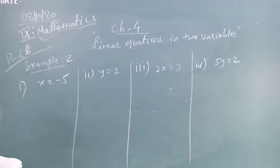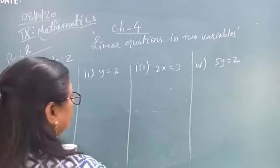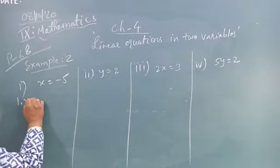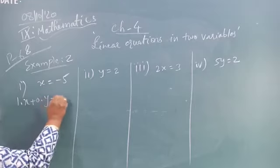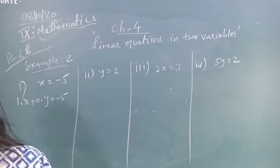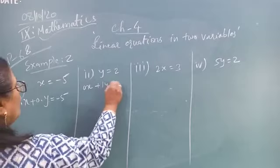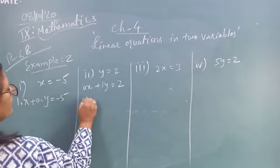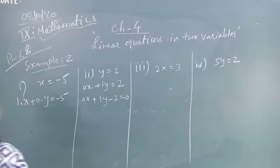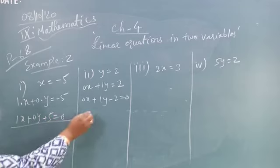In the first question, the value of X is given as minus 5. So this can be written as: 1 times X plus 0 times Y is equal to minus 5, and the standard form is 1X plus 0Y plus 5 is equal to 0. For the second one, Y is equal to 2 means we can write: 0X plus 1Y is equal to 2, so the standard form is 0X plus 1Y minus 2 is equal to 0.